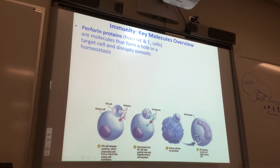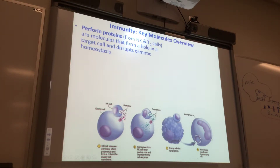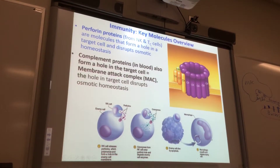— you've poked a hole in that enemy cell. Now that enemy cell is going to be osmotically disrupted — water is going to rush in or rush out depending on the surrounding fluid. You've osmotically disrupted that enemy cell, so it's going to die. With just perforins, it can die. There are also proteins circulating in your blood right now that form a hole — these complement proteins can also punch a hole in the enemy cell.